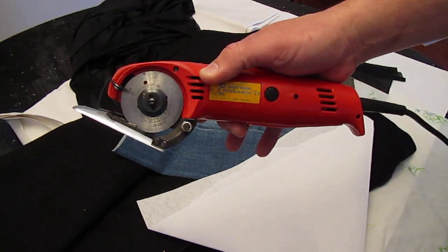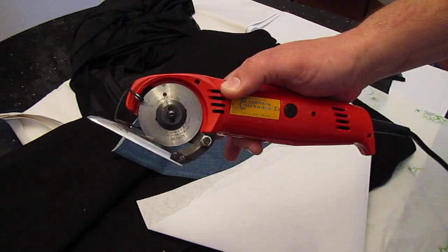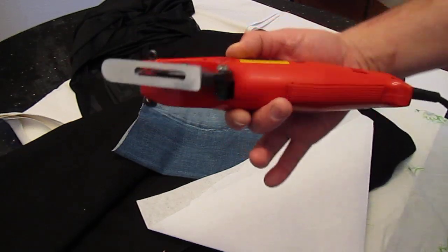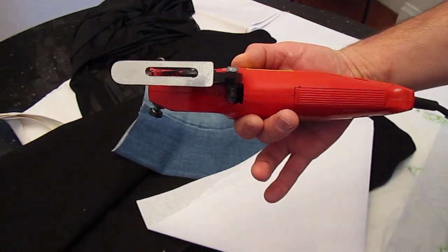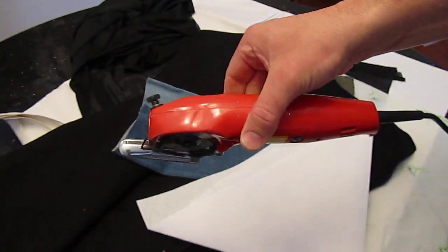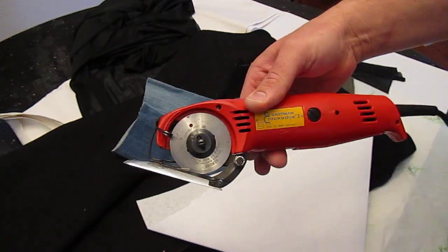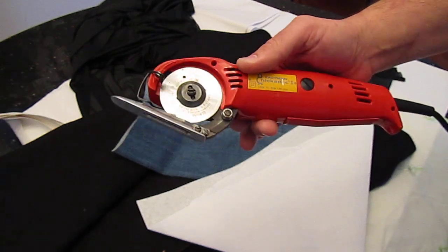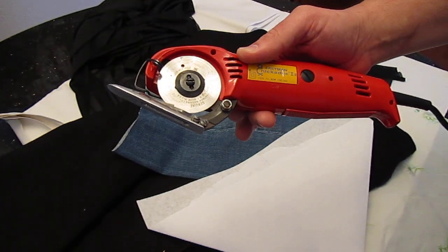This is the Chickadee 2, 120-volt, 40 watts. 40 watts doesn't sound like much, but when it comes to cutting materials, especially when you have a small graphite brush motor running through a little worm gear, driving the blade, gives you quite a bit of torque.